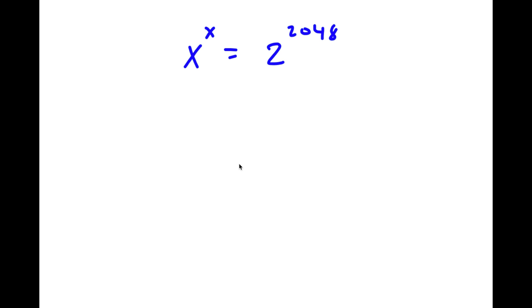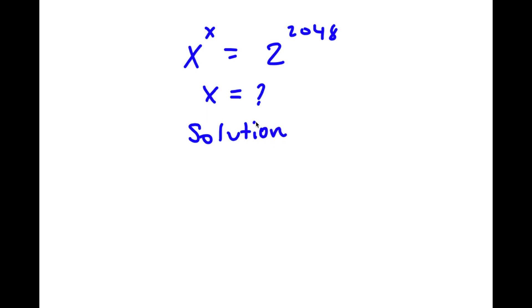All right guys, welcome back to Clicking Dynamics. In today's video, I'm going to be teaching you how to solve this exponential equation. I have x to the power of x is equal to 2 to the power of 2048. So I obviously want to find the value of x here. For my solution, I first start with x to the power of x is equal to 2 to the power of 2048.